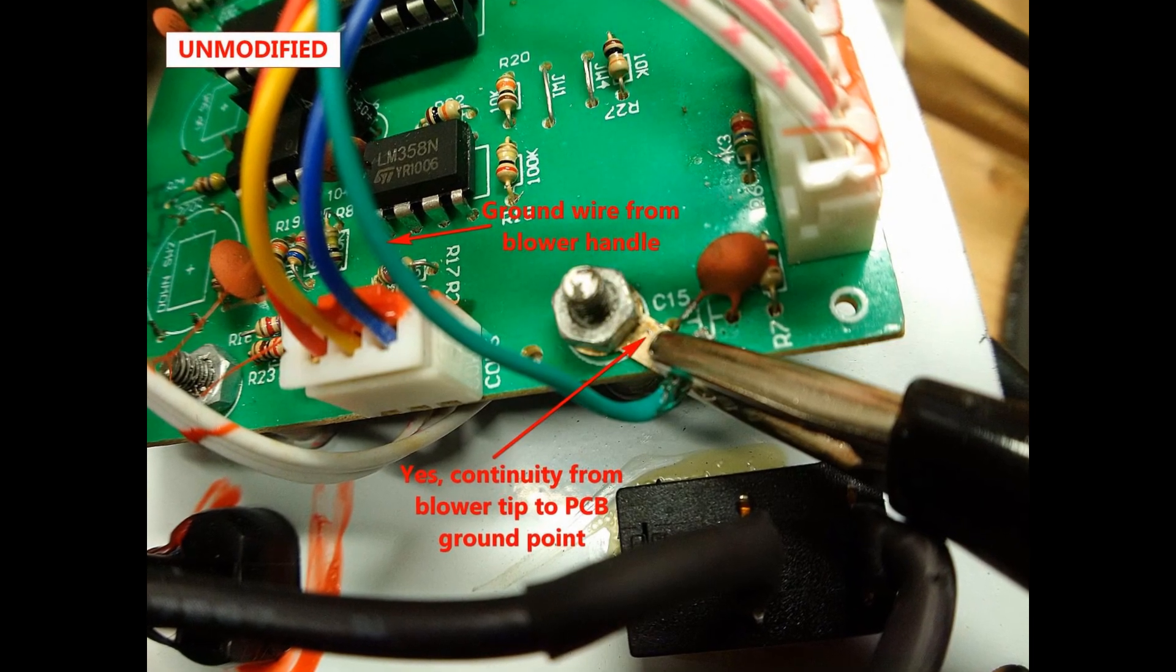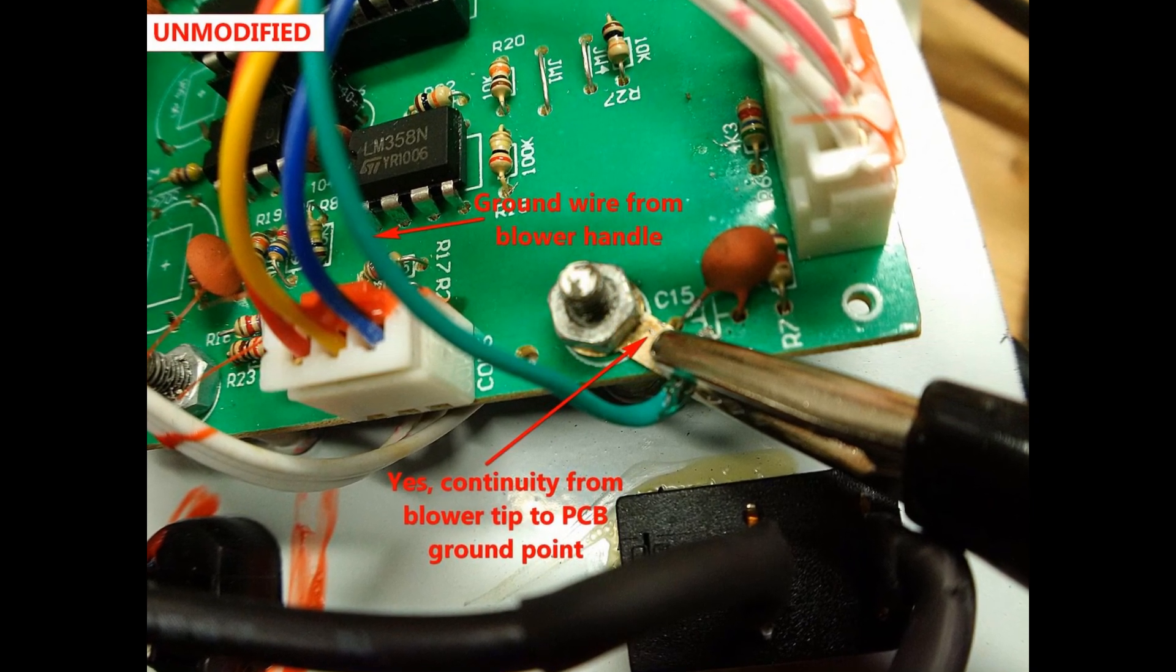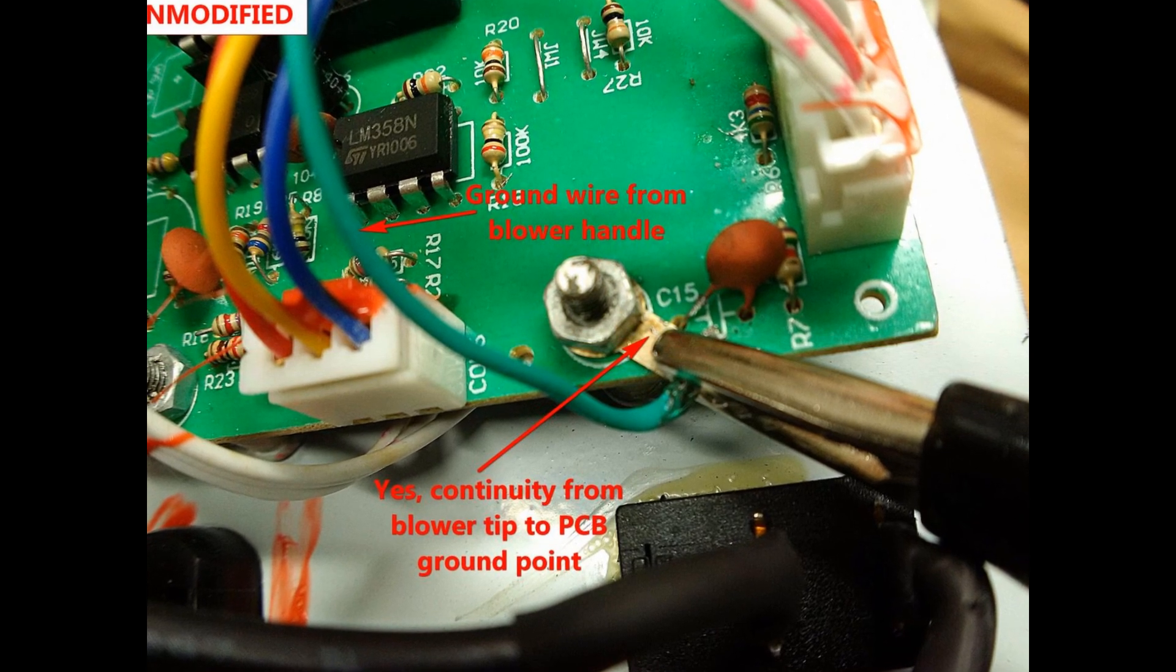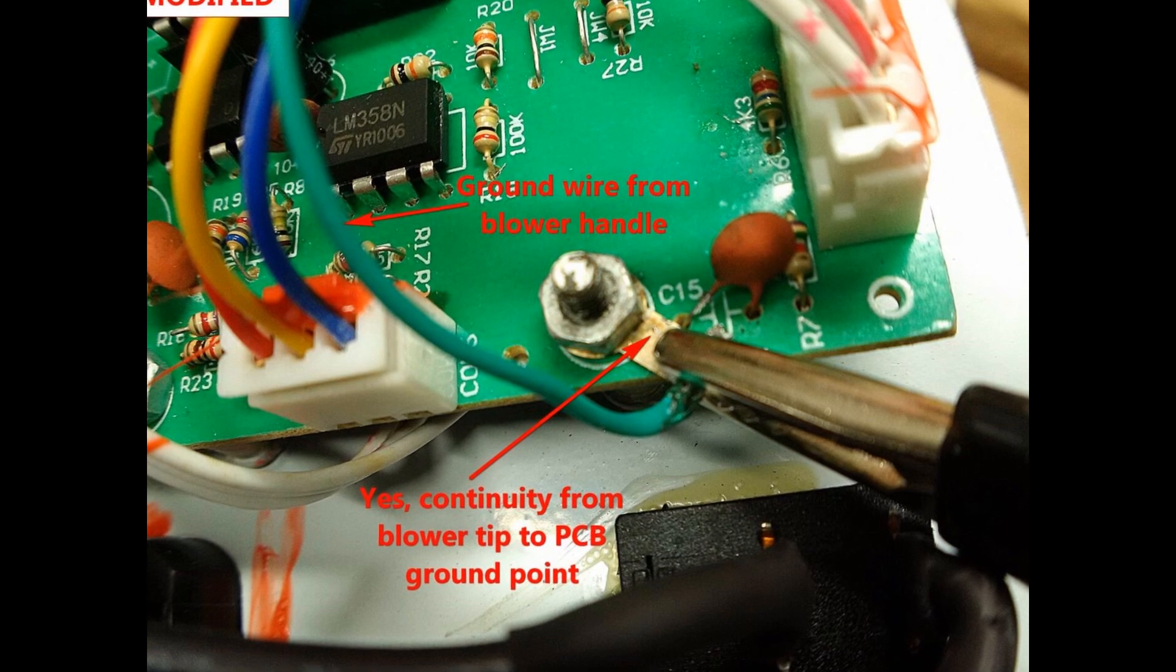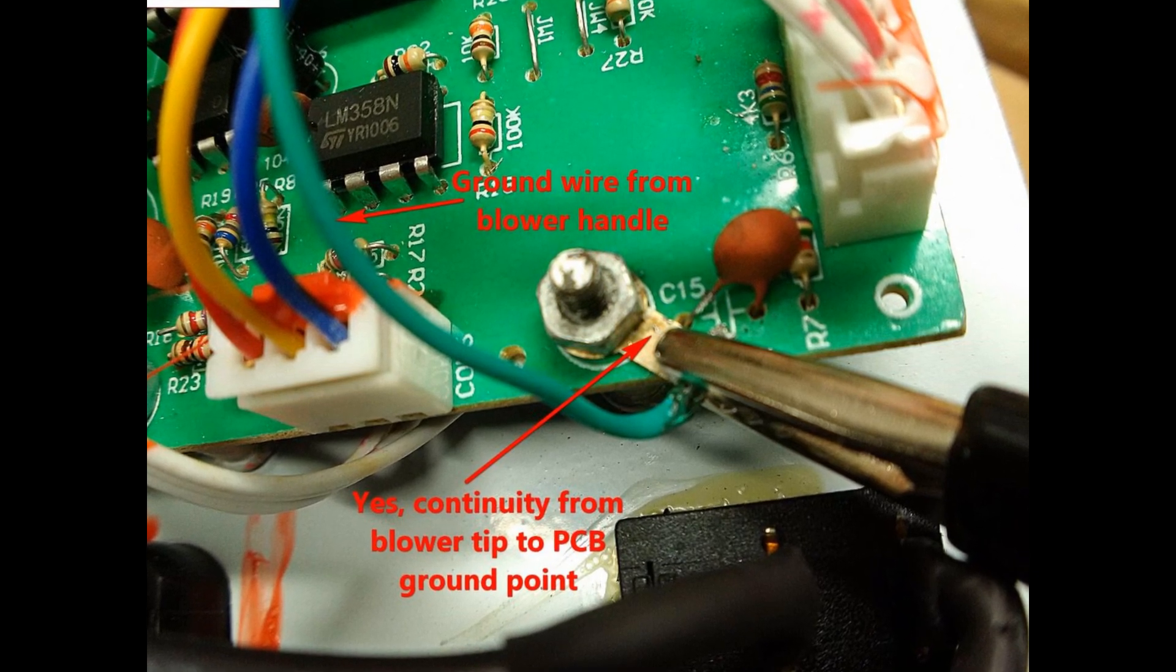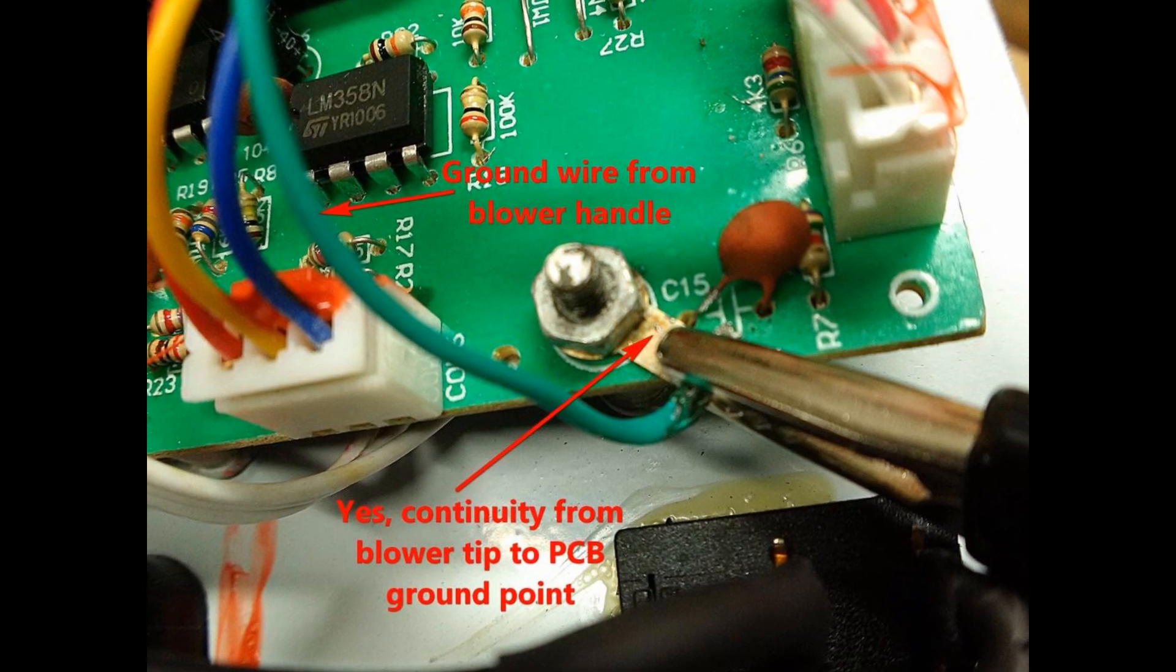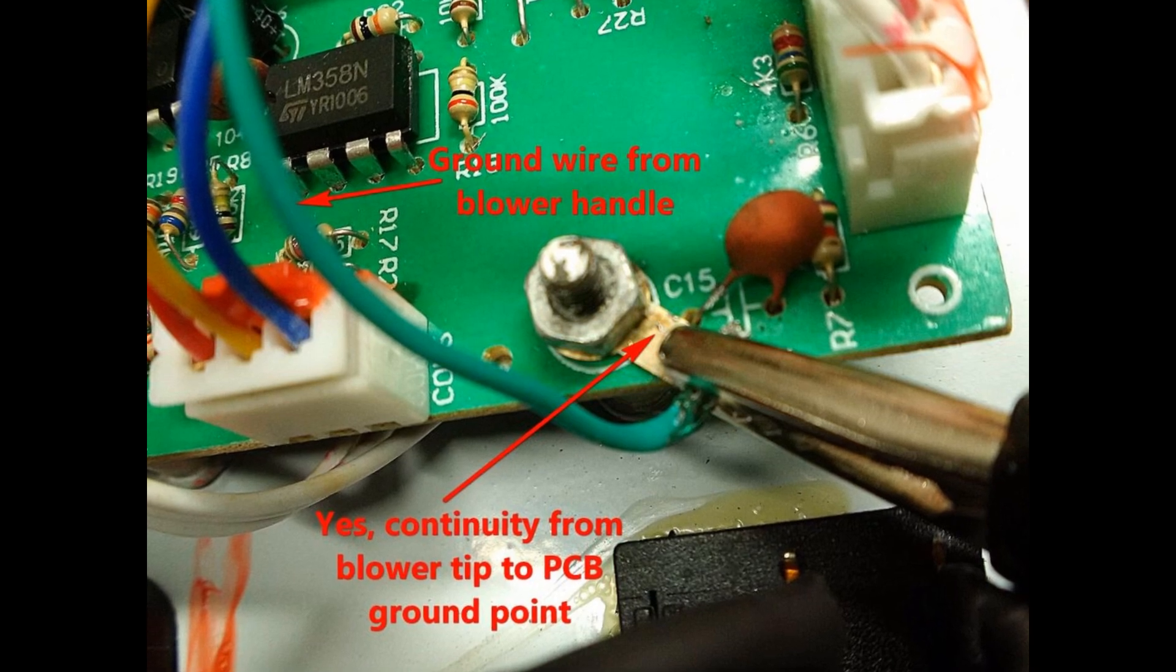Meanwhile, on the blower side of things, there is another green ground wire that comes from the blower handle and is connected by a nut on the painted metal PCB mounting post which is part of the metal faceplate. So yes, if there ever was a critical failure of the heater element, potentially the metal faceplate could become energized.